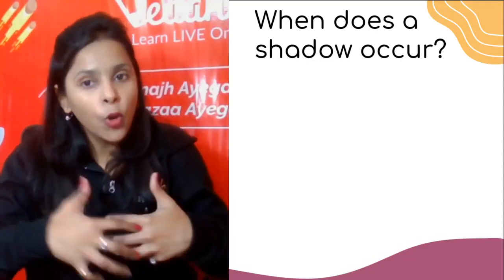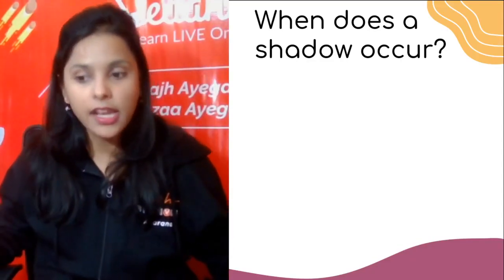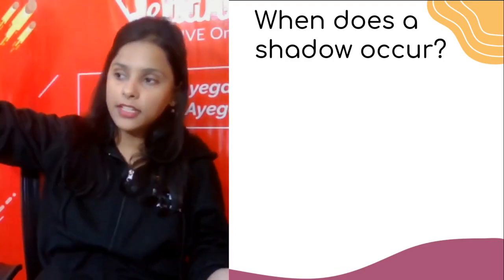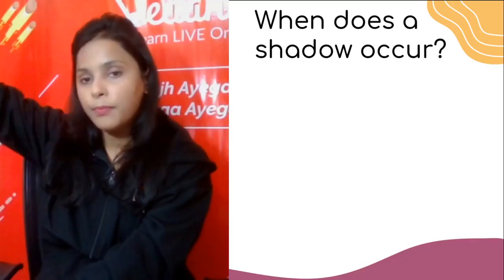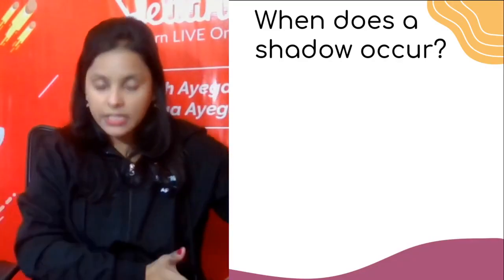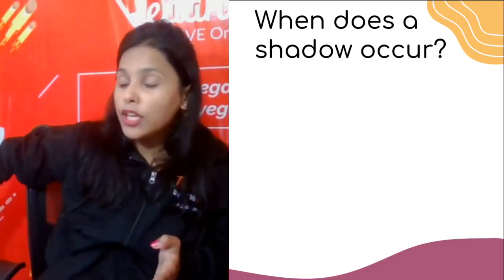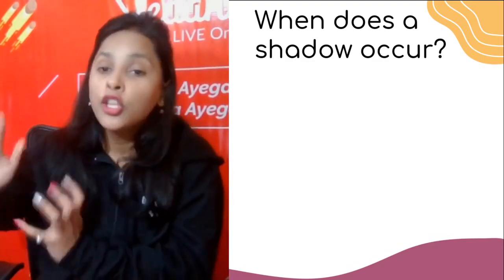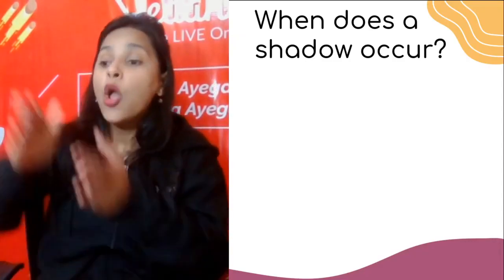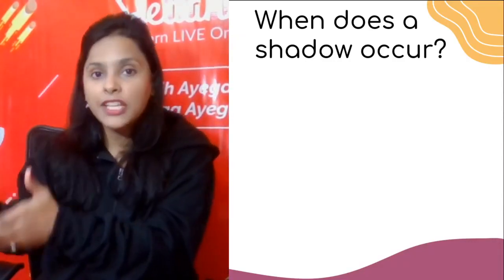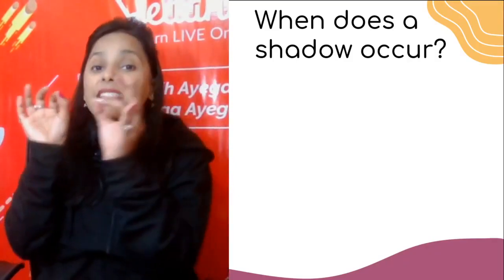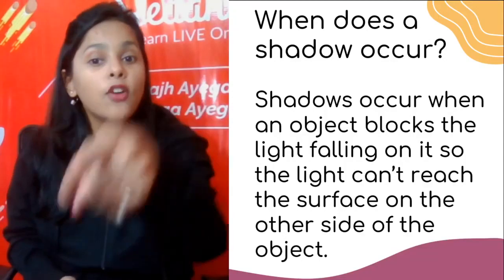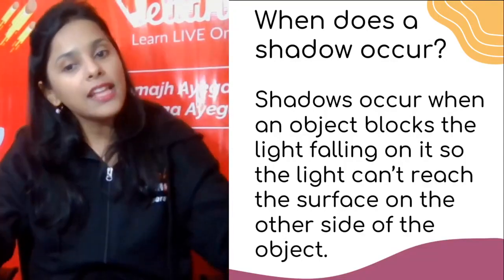Now we will understand how shadows are formed. Let's assume that you are throwing a lot of light from one side, and I place a very big table in the way. Will the light come through on the other side? No, because that table is blocking the light — it is stopping it, being a hurdle. So it will create a shadow. When some object blocks the light from reaching another surface, that is exactly when a shadow occurs. Shadow occurs when an object blocks the light falling on it, so the light cannot reach the surface on the other side.